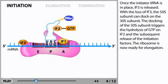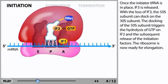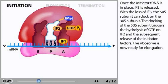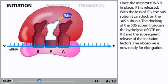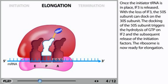Once the initiator tRNA is in place, IF3 is released. With the loss of IF3, the 50S subunit can dock on the 30S subunit. The docking of the 50S subunit triggers the hydrolysis of GTP on IF2 and the subsequent release of the initiation factors. The ribosome is now ready for elongation.